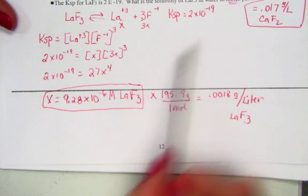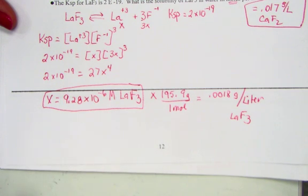This problem did say to stop at moles per liter, which was the value of x. That concludes the Ksp in our notepad practice.